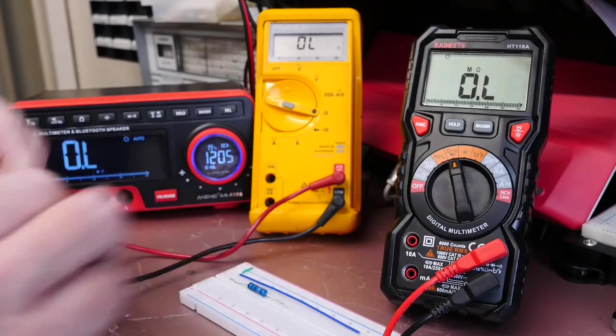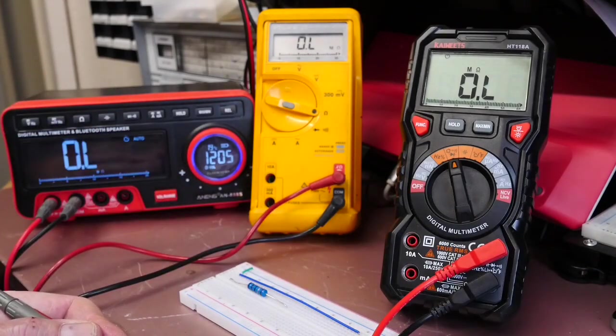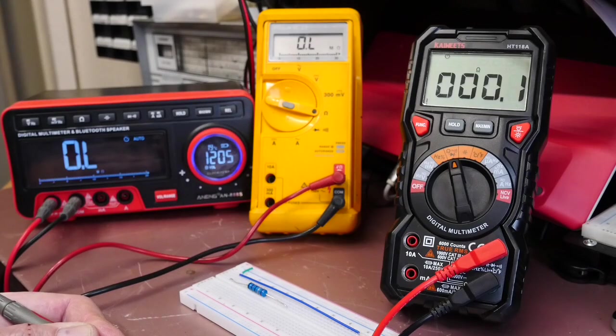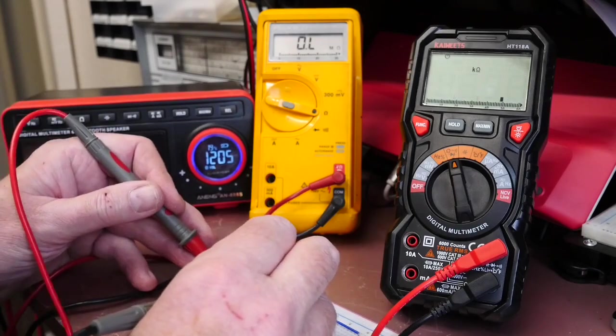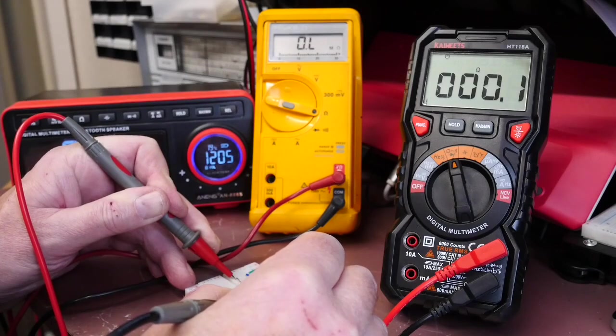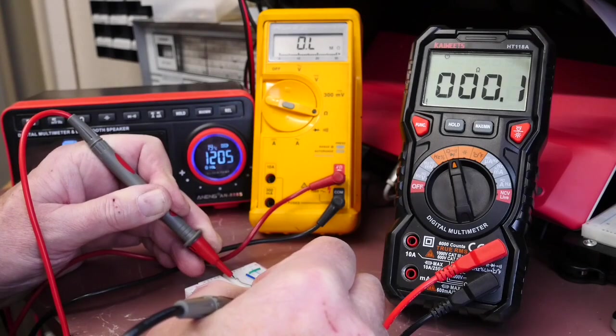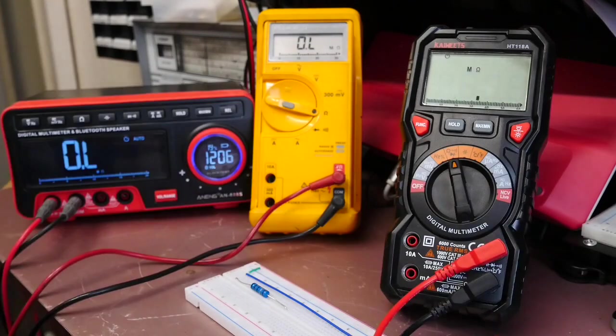And finally the Kiwitz HT118A. Short the probes together and it's saying 0.2, 0.3. Similar response to the Fluke. So we'll try it on the resistor: 0.2, 0.1, so again we're getting three quite different readings.